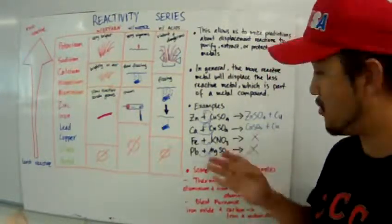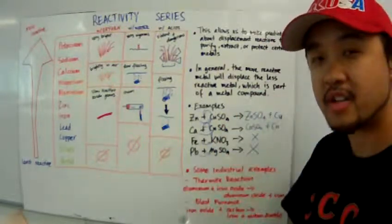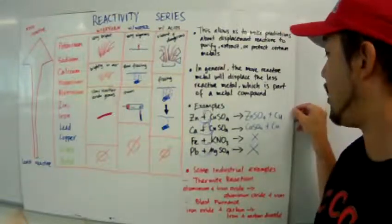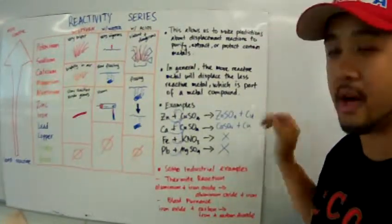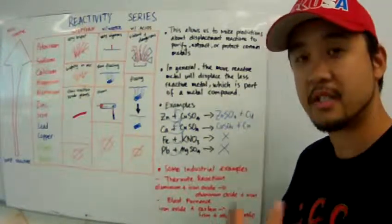So, there you go. Simple ways to make predictions where the displacement reaction will occur. Now, finish this off. Here are a couple of industrial examples of a displacement reaction.